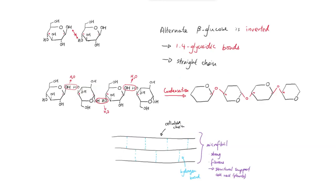To summarize: in cellulose, the alternate beta-glucose molecule is inverted — it turns upside down — so that the two hydroxyl groups on carbon one and carbon four are close enough together to undergo a condensation reaction, forming 1-4 glycosidic bonds. Because they only have 1-4 glycosidic bonds, they form a straight chain. All those chains join together with hydrogen bonds to form a microfibril, which is quite strong and therefore provides structural support in plant cell walls. That is the structure of cellulose, a beta-glucose polysaccharide.